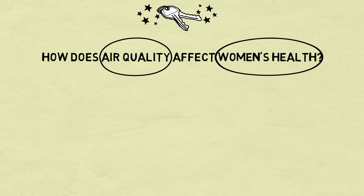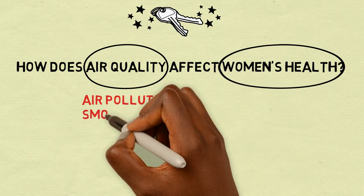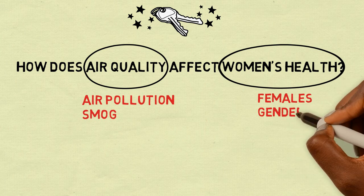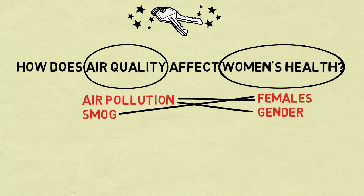Now, brainstorm and take note of related keywords, such as synonyms or broader or narrower terms. This will give you more options to mix and match so you retrieve the best results. For example, air pollution and smog are terms related to air quality, and females and gender might get results related to women. Possible combinations include air pollution and females, air pollution and gender, smog and females, smog and gender.